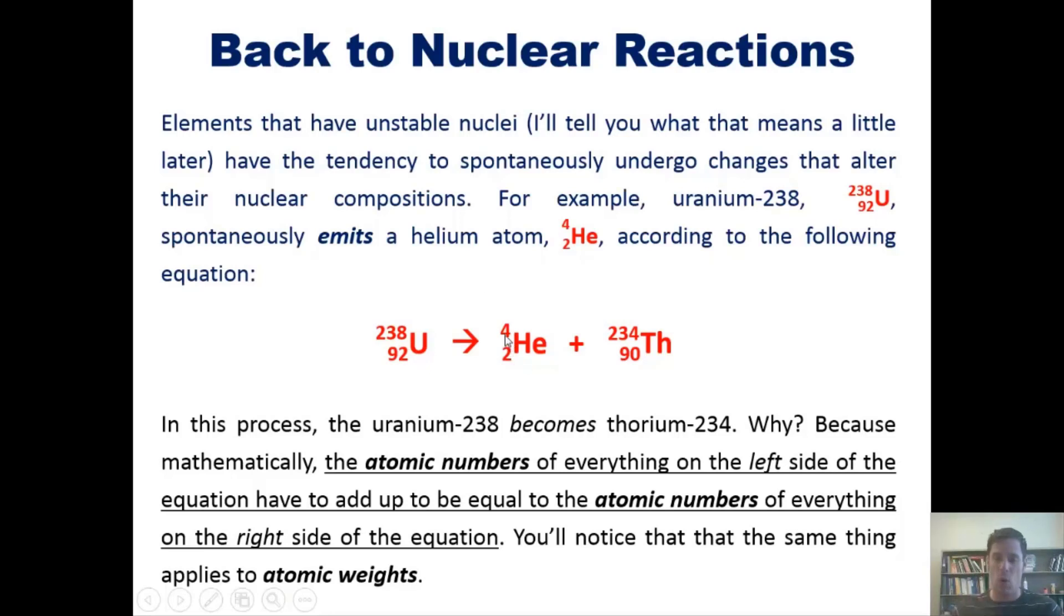On the right side, there's a 4 next to this helium and 234 next to thorium. 4 plus 234 adds up to 238, which is the atomic mass of this uranium atom. Similarly, 2, the atomic number for helium, plus 90, the atomic number for thorium, equals 92, which is the atomic number for uranium.